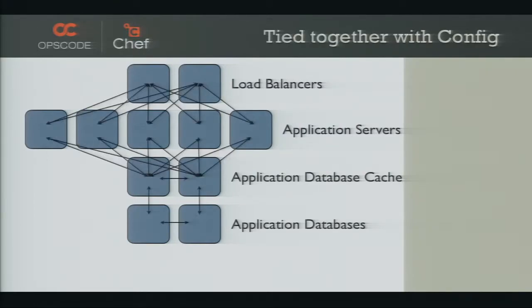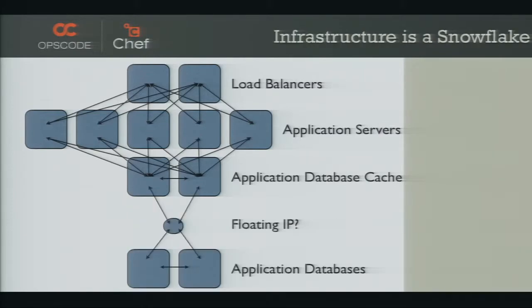But all these things are tied together with configuration. All these machines are talking to each other and they need to know about what everyone else is doing. The application servers are trying to talk to a database, so they need the caching layer. Every infrastructure is kind of a unique snowflake. HP's OpenStack does not look like Rackspace's OpenStack behind the scenes. So everyone's infrastructure is a unique snowflake. Servers are pretty much interchangeable, but infrastructure is pretty unique.